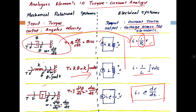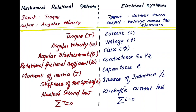In all these cases, input is current and output is voltage across the element. There are three elements: resistor, which is equivalent to dashpot; spring is equivalent to inductance; and moment of inertia is equivalent to capacitor. Using this basic information, we are going to solve the problem.